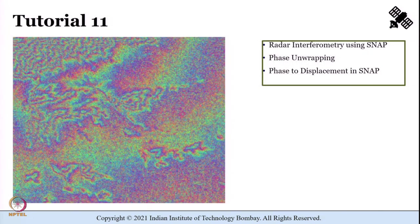Tutorial 11 shall explain interferometric synthetic aperture radar, popularly known as InSAR, which is used to estimate information about the earth surface using the phase difference between two complex SAR measurements. In this tutorial we shall use the Single Look Complex (SLC) SAR observation, which consists of amplitude and phase information. The exercise of generating an interferogram shall be carried out in SNAP.